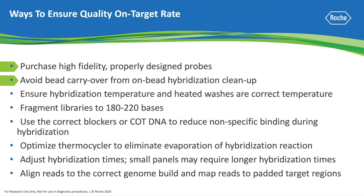The temperature of the hybridization and wash steps are critical to the success of target enrichment sequencing workflows. Therefore, ensure that the hybridization and wash steps are carried out at the correct temperatures. Data analysis methods can also affect on-target rates. Much like designing probes to the correct genome build, aligning sequencing reads to the correct genome build is critical for maintaining on-target rates. Additionally, on-target rates can be improved by adding padded regions to the ends of target regions to ensure flanking on-target mapped reads are included.